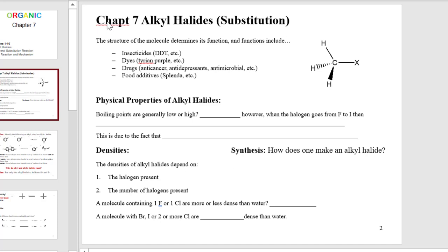We're going to start with a functional group called the alkyl halides. From now until the end of organic two, we're going to introduce a new functional group, look at it from a physical property standpoint, then look at how we can synthesize molecules bearing that functional group, and then talk about that functional group as the starting material — what reactions can we do? So let's begin.